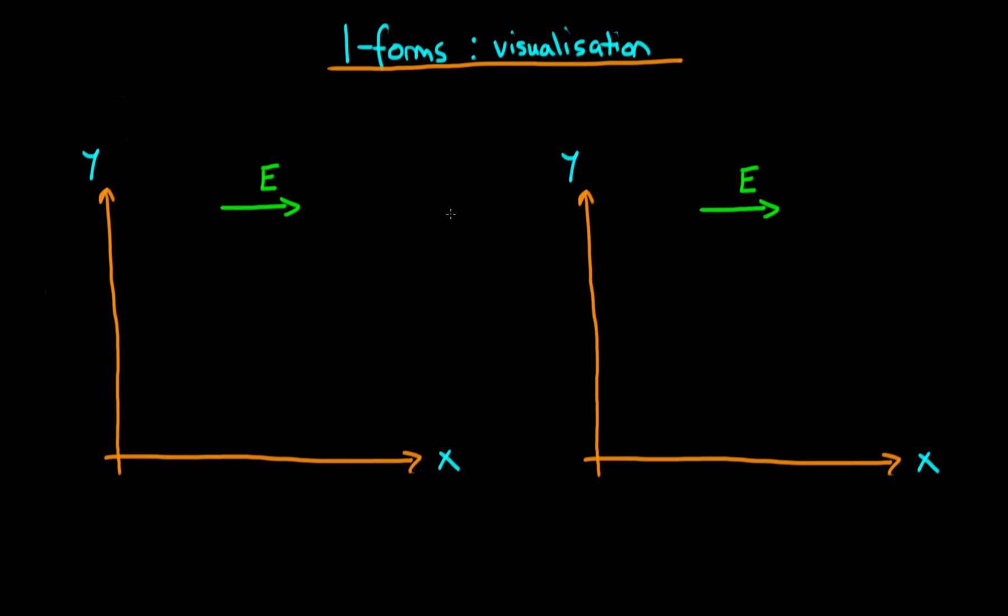In this video I want to discuss how we can think about visualizing one-forms, and the reason for doing this is that dual vectors are a type of one-form. The idea behind visualizing one-forms is to convert integration into counting. This might seem a little bit abstract, but that's basically the idea behind all methods of visualizing one-forms.